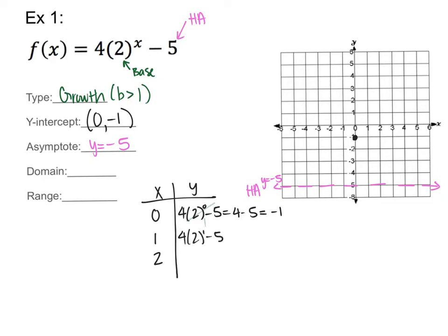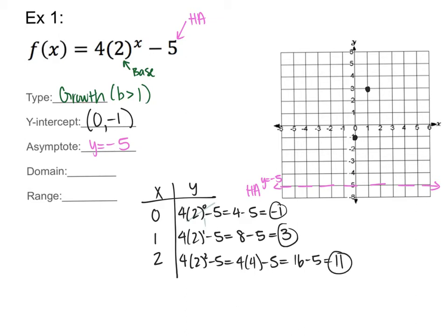Plugging in x = 1: 2 to the first power is 2, so 4 times 2 is 8, minus 5 is 3. So the point is (1, 3). Plugging in x = 2: 2 squared is 4, so 4 times 4 is 16, minus 5 is 11. I'll need to extend my axis and label it at 11. The point is (2, 11).